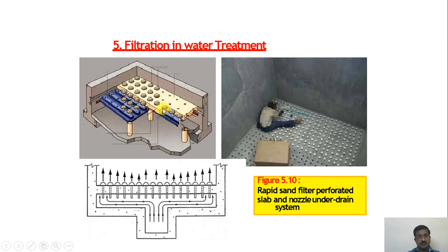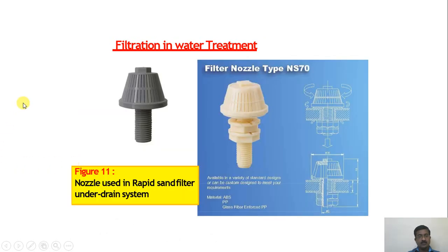In water treatment filtration, nozzles are sometimes provided instead of perforated pipes in the under drain system. These nozzles allow pressurized or compressed air to be sent through, removing clogging from the different layers. The nozzles have perforations fixed on a pipe system with a thread arrangement and can be replaced. This is visible in the photographs showing nozzle installation.